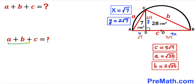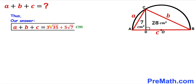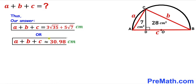Finally, we calculate a + b + c. With a = √35, b = 2√35, and c = 5√7, we get: √35 + 2√35 + 5√7 = 3√35 + 5√7 centimeters, which is approximately equal to 30.98 centimeters. Thanks for watching and please don't forget to subscribe for more exciting videos!